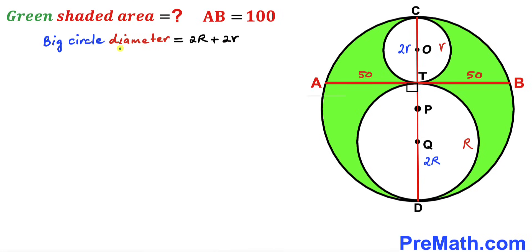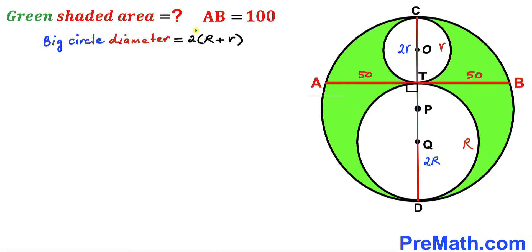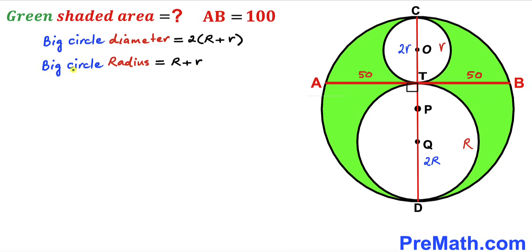The diameter of the big circle is 2R + 2r, which we can factor as 2(R + r). Therefore, the radius of the big circle is R + r.